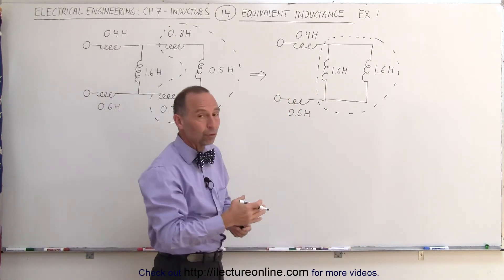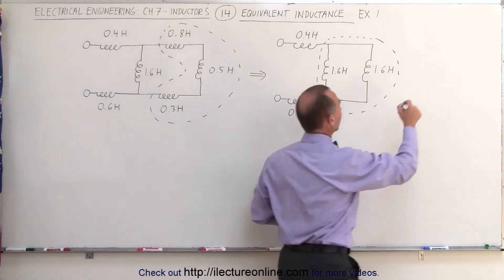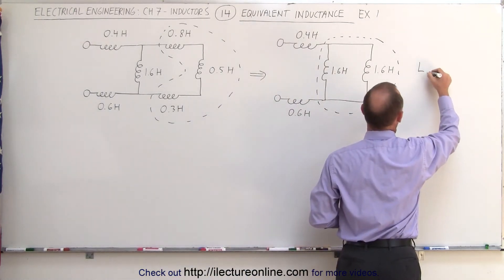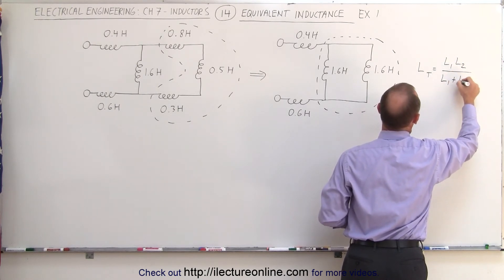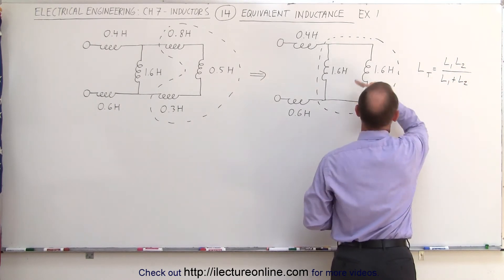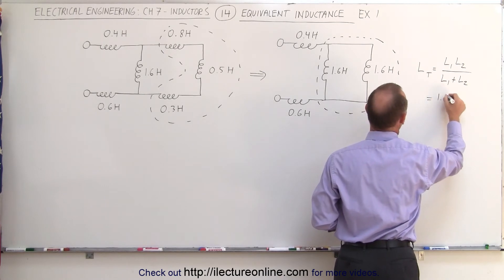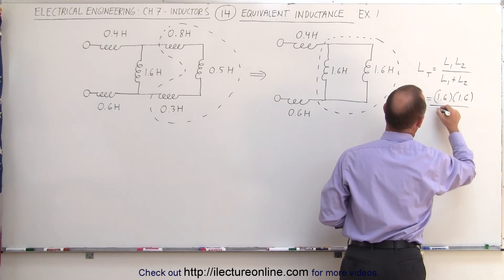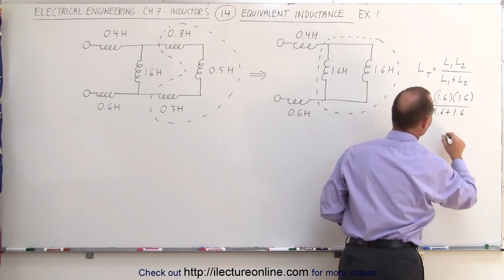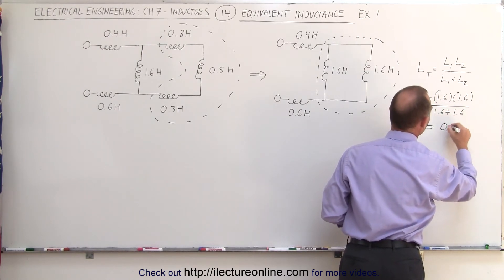Since they're in parallel, we're going to use the product over the sum rule. We can say that L total or L equivalent is equal to the product L1 times L2 divided by the sum L1 plus L2. In the case of these two right here, this would be 1.6 times 1.6 divided by 1.6 plus 1.6, and that ends up being 0.8.